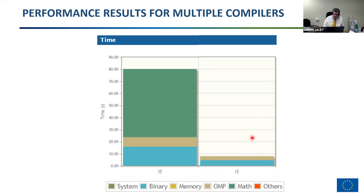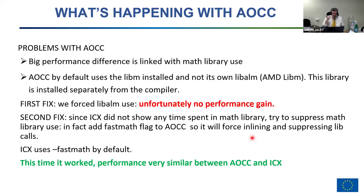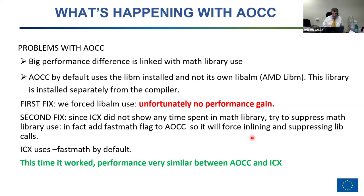We identified the math library as the big problem. AOCC by default, instead of using its own library libALM, was using libm. We installed ALM and forced its use — unfortunately no performance gain. We then realized that ICX showed no math library time at all, so we tried suppressing math library calls by forcing fast math. This forced inlining and suppressed lib calls, and then AOCC and ICX performance was within three percent of each other.